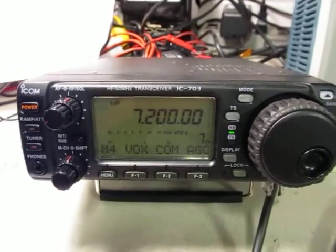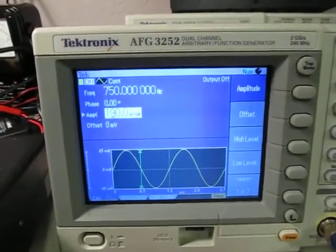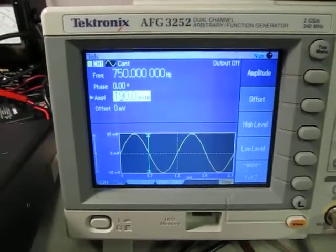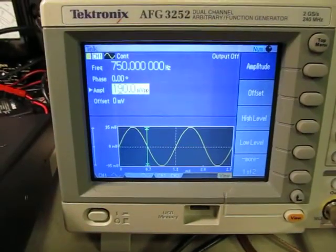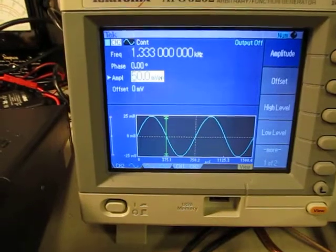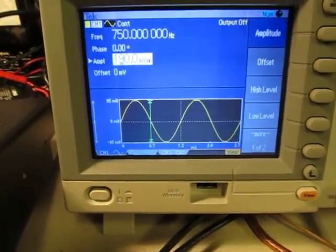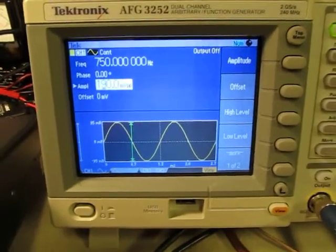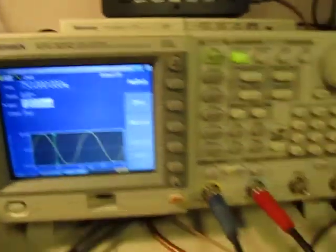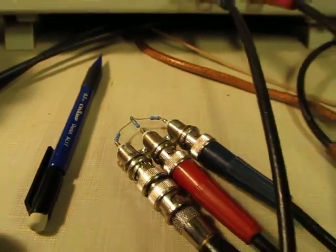We're going to generate a couple of test tones with this signal generator. One at 750 Hertz and another at 1.333 kilohertz. One of the important conditions for this test is that the two tones are not harmonically related. Those two tones are going to be added together in this summer circuit here.